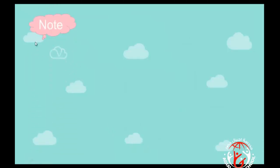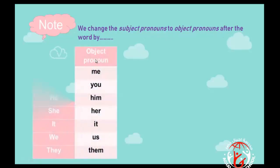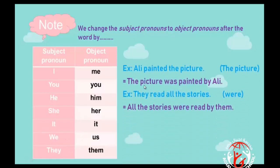A simple note: we change subject pronouns to object pronouns after the word 'by,' because we want to focus on the object. You have to memorize this table: I becomes me, you stays you, he becomes him, she becomes her, it stays it, we becomes us, they becomes them.